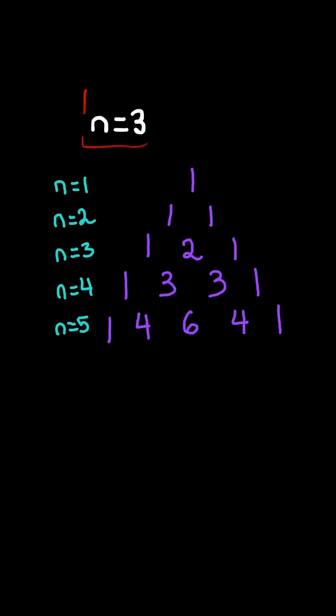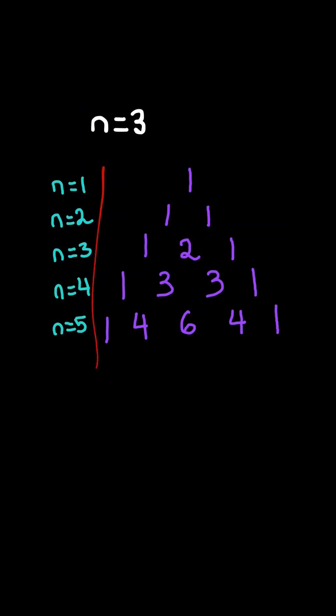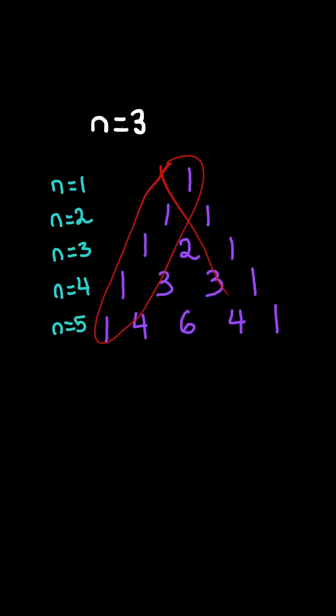Pascal's triangle. Given the number of rows n, consider Pascal's triangle. It is a triangle with ones along the diagonal, and every other element is the sum of the two numbers directly above it.